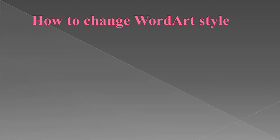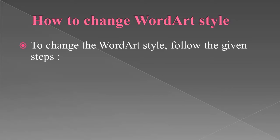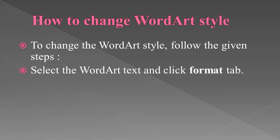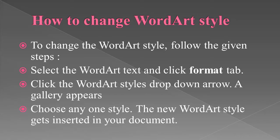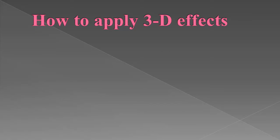Next is how to change the Word Art style. To change the Word Art style, follow the given steps. First, select the text you want to convert from the Format tab. Then click the Word Art style drop-down arrow. A gallery appears. Then select the desired quick style — choose any one style. The new Word Art style gets inserted in your document. Word will automatically create a text box from your text and apply the style to the text after converting to Word Art.